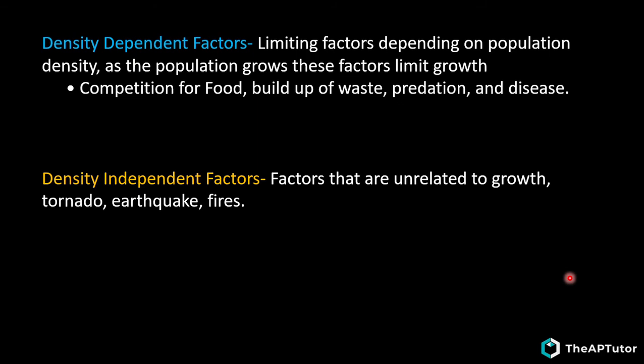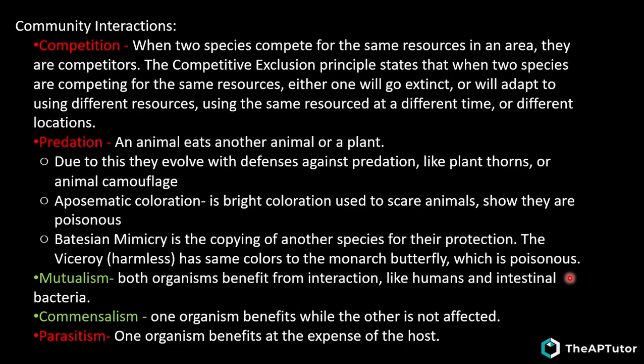Community ecology interactions: competition occurs when two species compete for the same resources. The competitive exclusion principle states that competing species will either drive one to extinction or one will adapt using different resources through temporal partitioning (different times) or habitat partitioning (different locations). Predation is when an animal eats another; organisms evolve defenses like plant thorns and animal camouflage. Aposematic coloration is bright coloring warning predators of poison. Batesian mimicry is copying a poisonous species - like the harmless viceroy butterfly mimicking the toxic monarch.